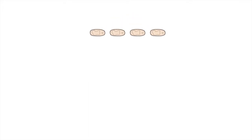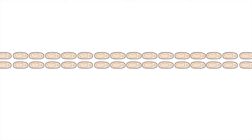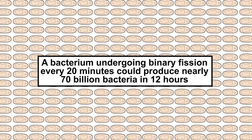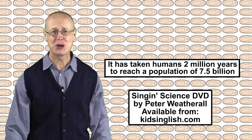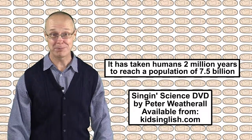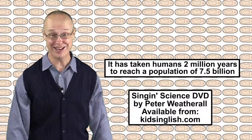Each of these daughter cells can then undergo this process again, and in ideal conditions, once every 20 minutes. This means a single antibiotic-resistant bacterium can multiply to produce nearly 70 billion antibiotic-resistant bacteria in just 12 hours. Humans have been around for a couple of million years, and our population still hasn't reached that level.